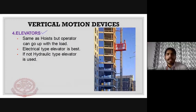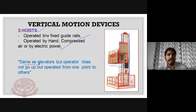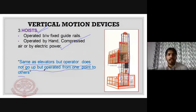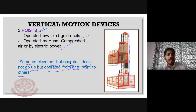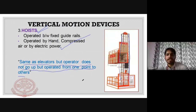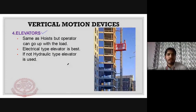The hoist and elevator are very similar — both are vertical motion devices. The difference is that in an elevator the operator goes up with the load, while in a hoist the operator stays at a distance and operates from one point. For very large construction projects we use elevators.